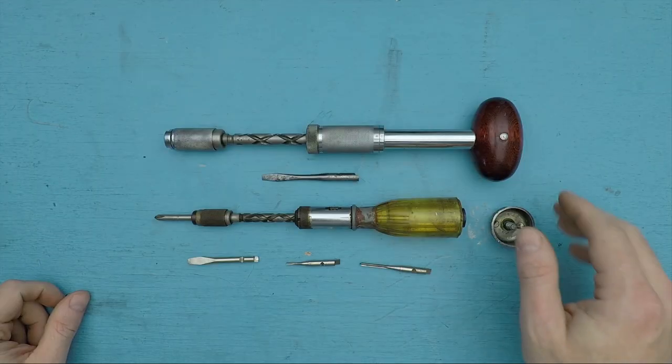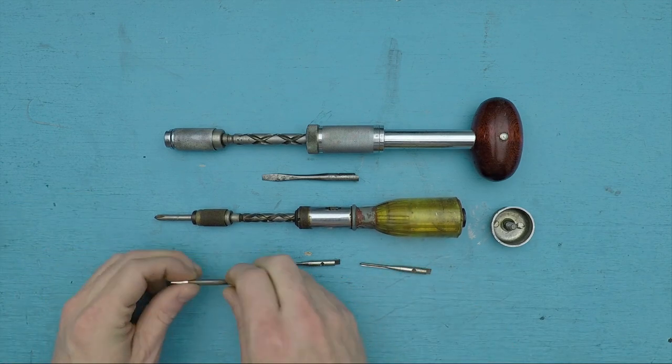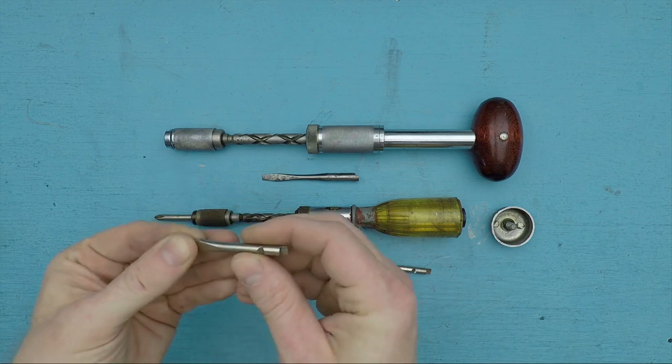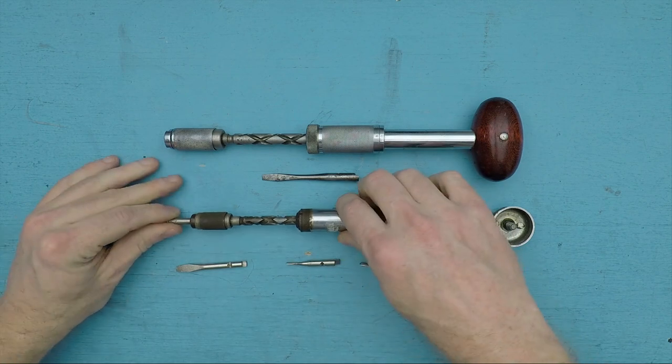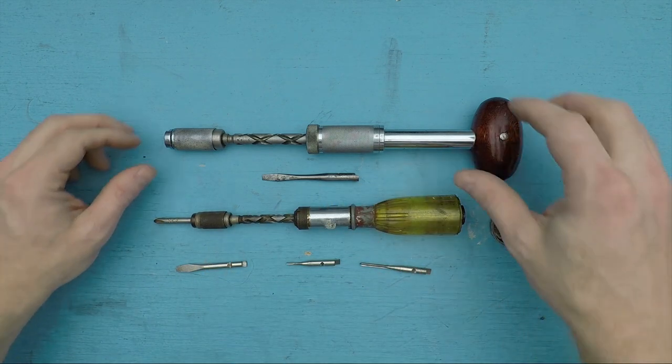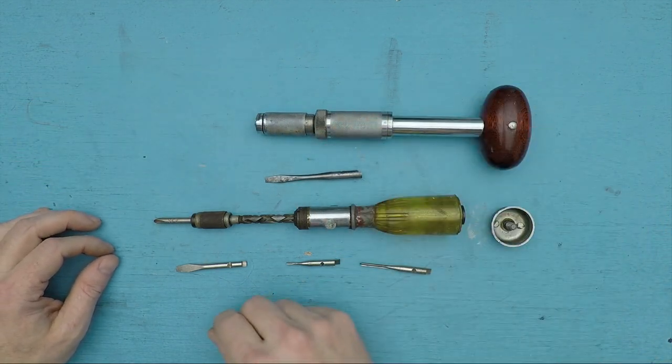The only problem with this tool and other so-called Yankee screwdrivers is the bits. They use this obsolete notched D-shaft design, and though it does give a really strong positive locking action, there are at least three different standard shaft diameters for these, and any shape other than flat or Phillips head is very difficult, if not impossible, to find.